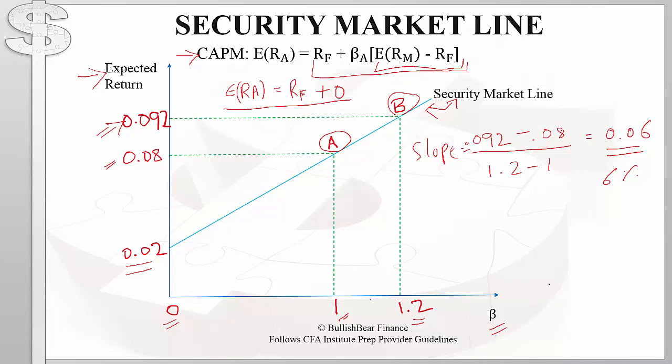An interesting point: what happens if beta is negative? The security market line extends to the left of the Y-axis, meaning the expected return would be less than the risk-free rate of 2%. Why would anyone invest in such an asset? Because it offers diversification benefits — a negative-beta asset moves down in price when the market portfolio goes up and vice versa, bringing stability to a portfolio.